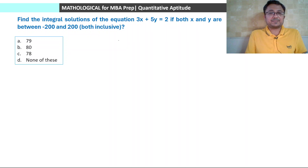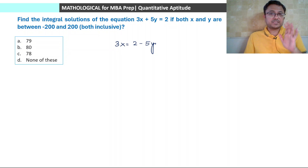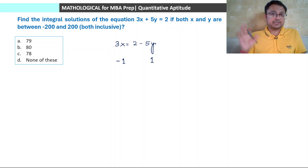So 3x plus 5y equals 2, we can write 3x equals 2 minus 5y. If you put y equals 0, no solution is obtained. If you put y equals 1, this becomes 2 minus 5, which is minus 3, so x will be equal to minus 1. We got the first solution: x equals minus 1, y equals 1.